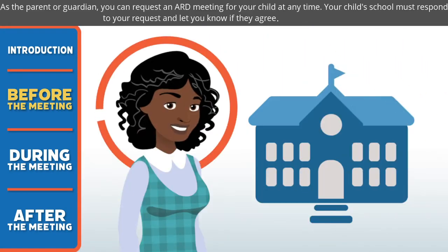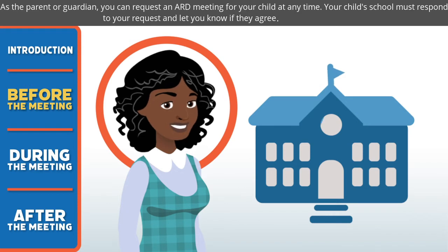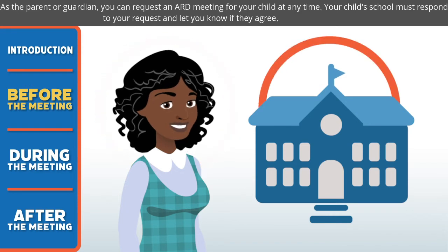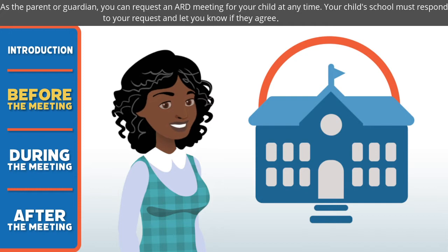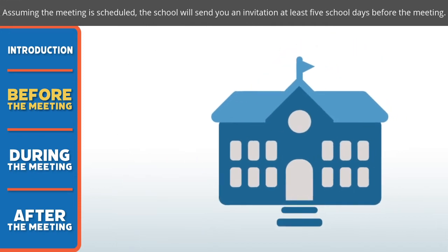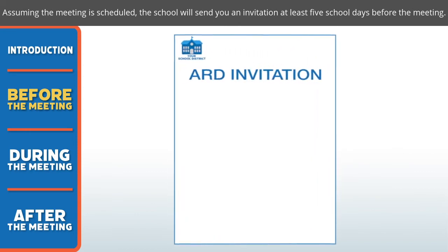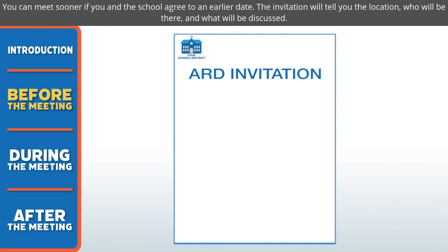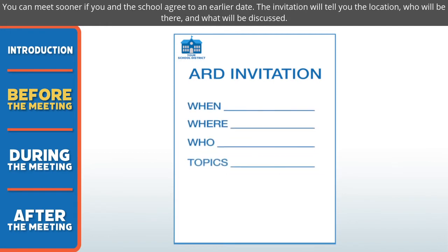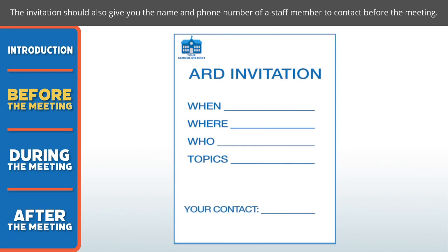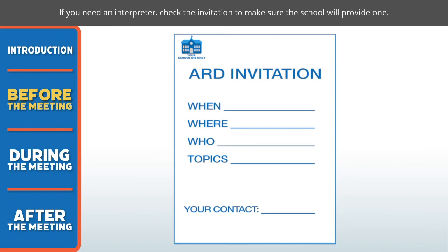As the parent or guardian, you can request an ARD meeting for your child at any time. Your child's school must respond to your written request and let you know if they agree. Assuming the meeting is scheduled, the school will send you an invitation at least five school days before the meeting. You can meet sooner if you and the school agree to an earlier date. The invitation will tell you the location, who will be there, and what will be discussed, and should also give you the name and phone number of a staff member to contact. If you need an interpreter, check the invitation to make sure the school will provide one.